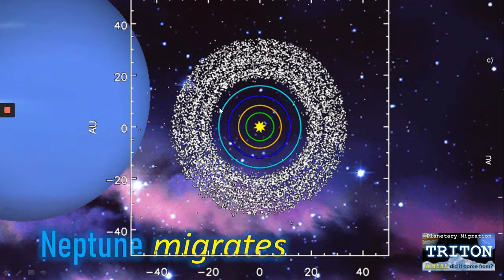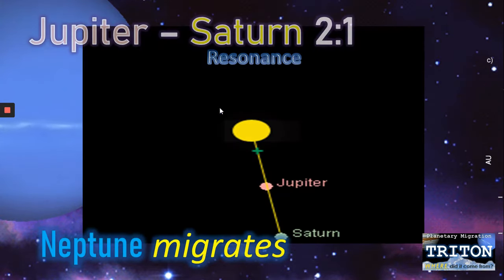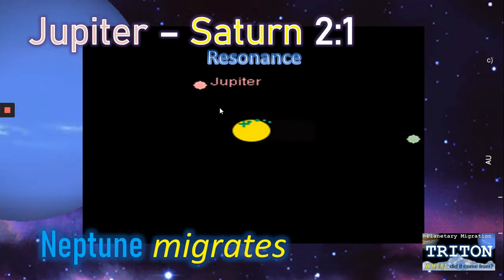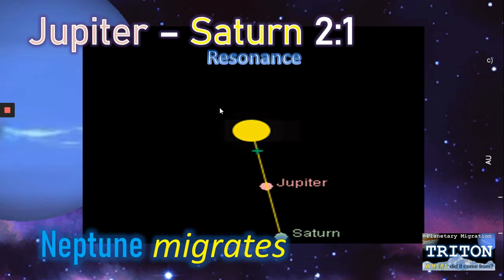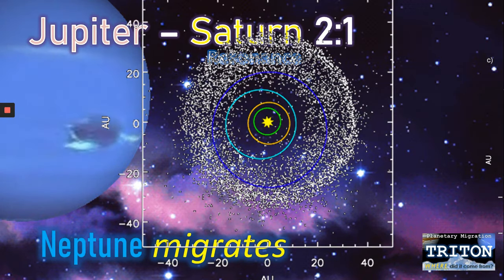Over time, these objects — the planetesimals — tugged at the orbits of each gas giant, until eventually Saturn and Jupiter found a resonance where Jupiter orbited twice for every once that Saturn went round. This meant that Uranus and Neptune were skewed and thrown out of their orbits.